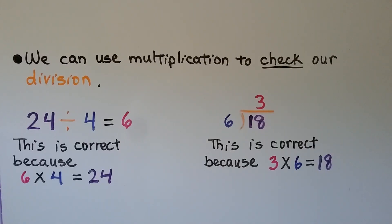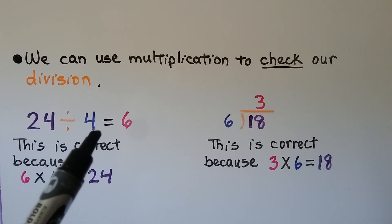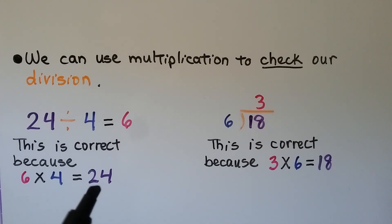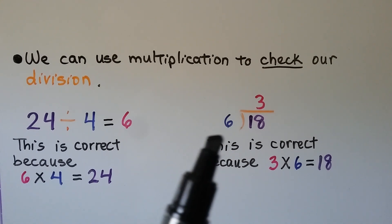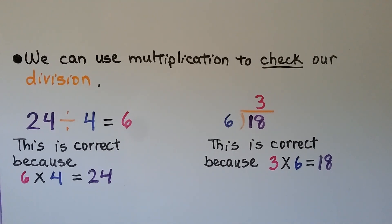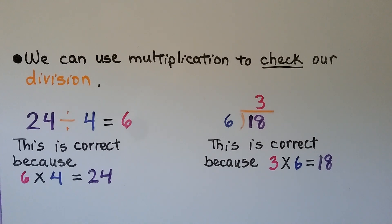We can use multiplication to check our division and see if we did our work correctly. 24 divided by 4 is equal to 6. We know this division equation is correct because 6 times 4 is equal to 24 — that's a related fact. Here, we've got 18 divided by 6 is equal to 3. We know this is also correct because 3 times 6 is equal to 18. So we know we did it correctly.